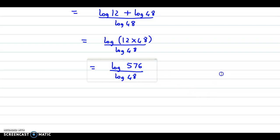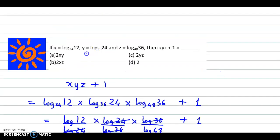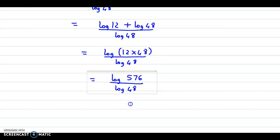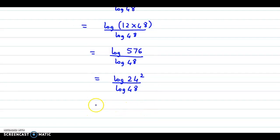Now if we look at the options, we have two in each of the terms. So if you observe 576, this could be written as log of 24 square upon log of 48. Now we transfer this two in the front.